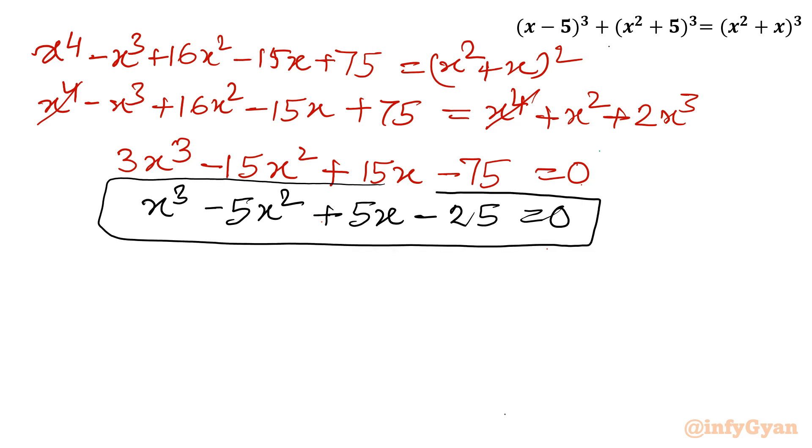For this we have to know the eligible factors of this number. So it is ±1, ±5, and ±25. If I will put x = 1, is there any solution? No. 1 - 5 + 5 - 5 will be no solution. -1 you won't get.